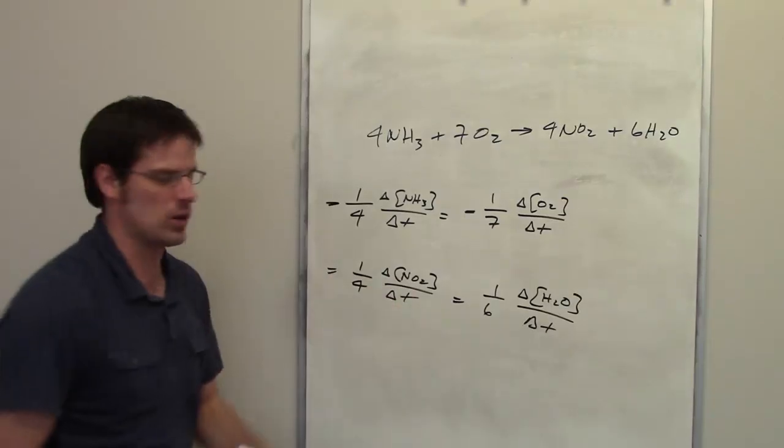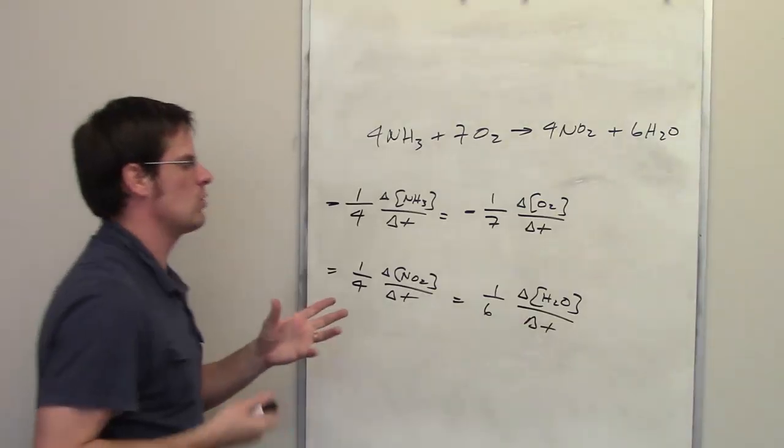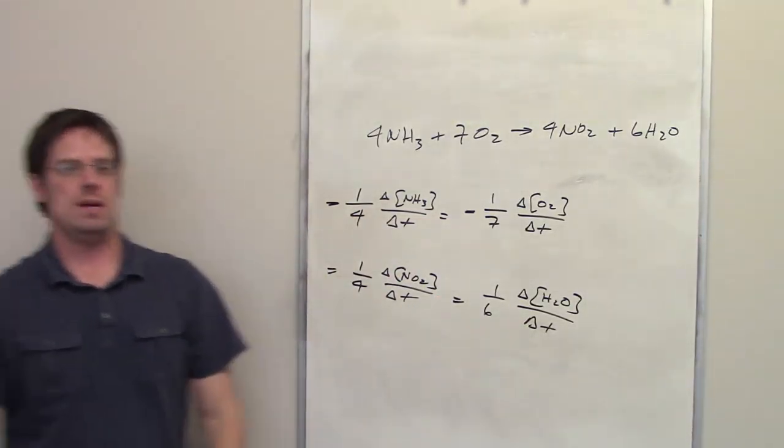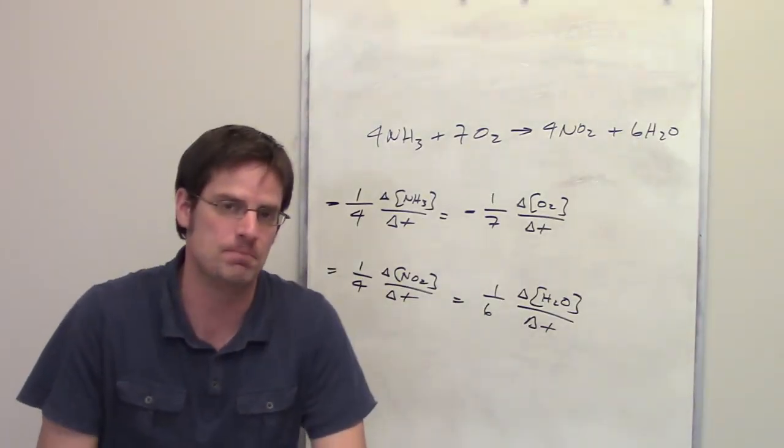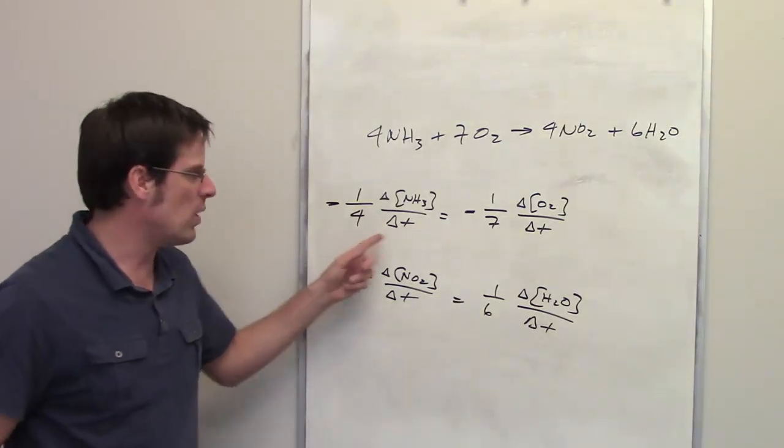This is the relative rate equation or expression for each component in this chemical reaction, and each of them is equal to each other. Since it asks us which of the multiple choice options is not a correct expression, it turns out as you look closely that every single one of